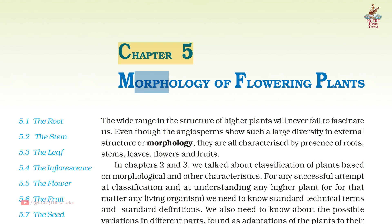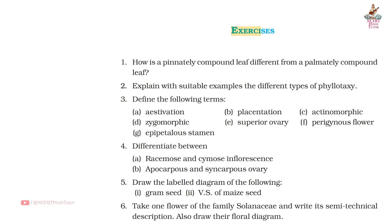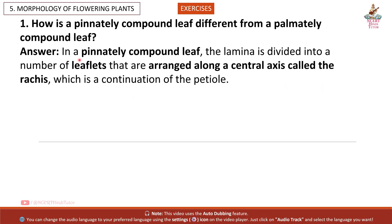Chapter 5: Morphology of Flowering Plants — Question Answers from Class XI Subject Biology Exercises. Question 1: How is a pinnately compound leaf different from a palmately compound leaf? Answer: In a pinnately compound leaf, the lamina is divided into a number of leaflets that are arranged along a central axis called the rachis, which is the continuation of the petiole.